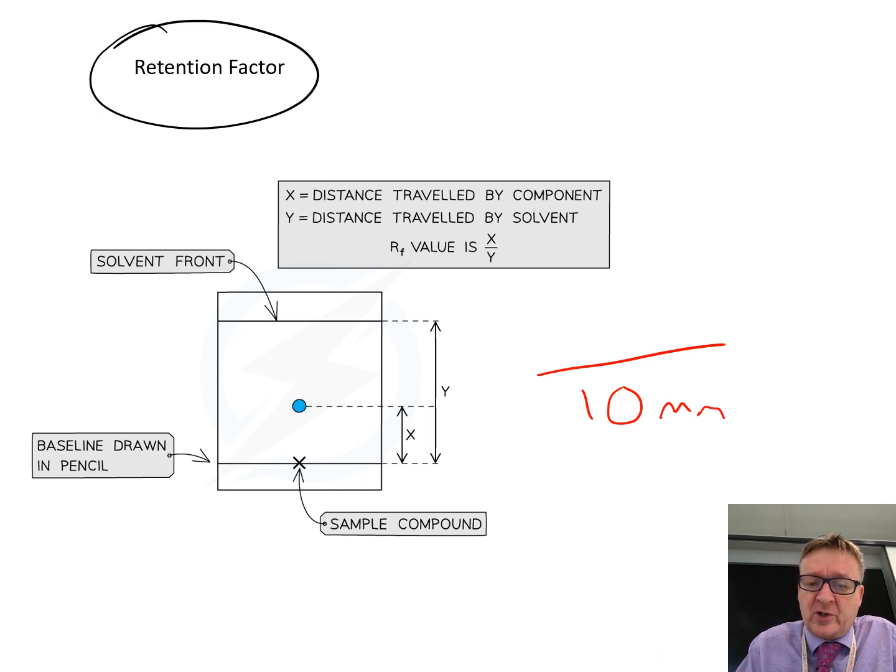On the top of the equation you put the distance the dot has traveled—I think I did it at 6 millimeters. To work out the retention factor you do 6 divided by 10, which is 0.6. That is the retention factor for that color.